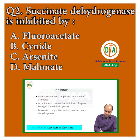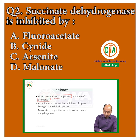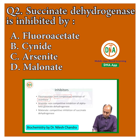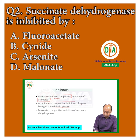Fluorocitrate will inhibit aconitase, and the mechanism of inhibition is non-competitive inhibition. Arsenide will inhibit alpha-ketoglutarate dehydrogenase, and again, the mechanism of action is non-competitive inhibition.